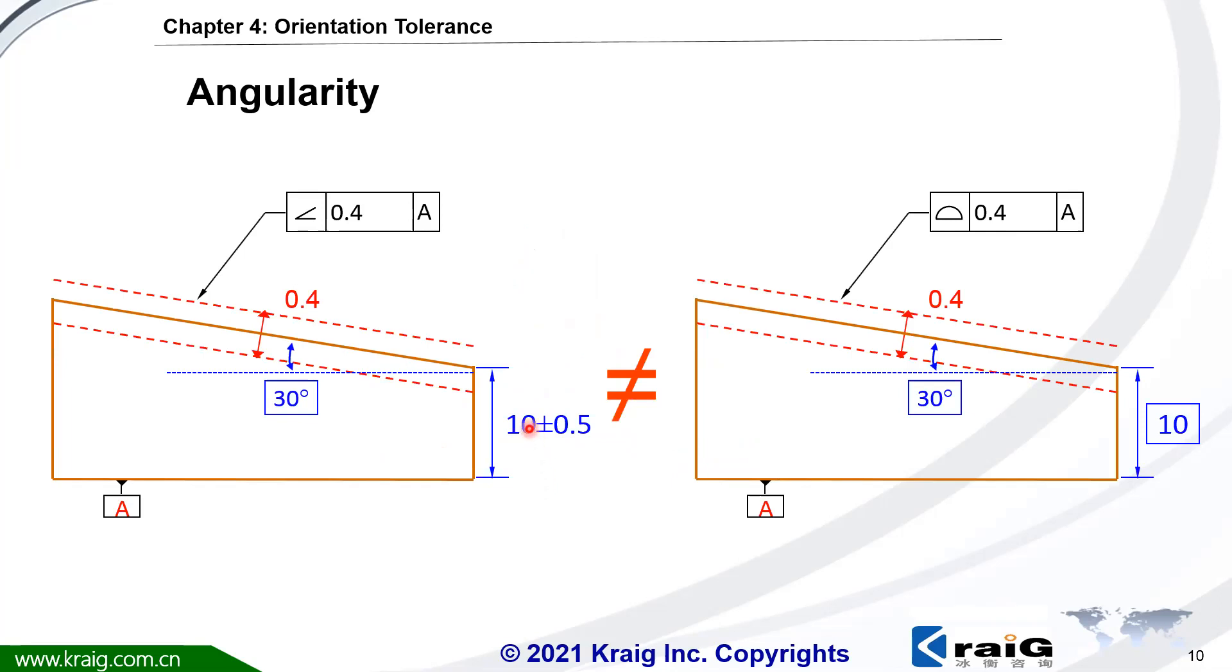Angularity is different from profile with datum A. As we said, angularity is not going to control location. The tolerance zone can be floating up and floating down.